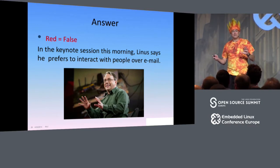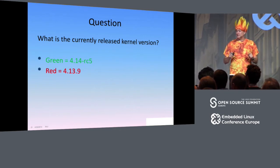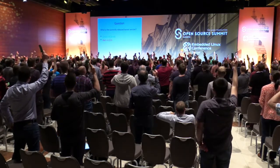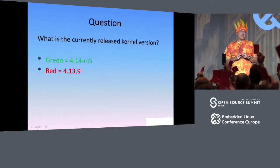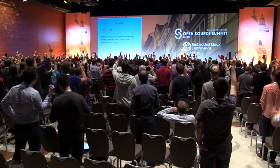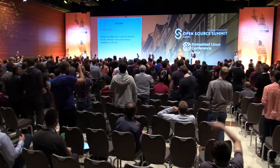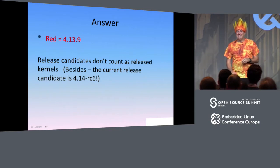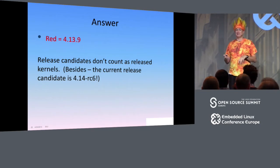Now we'll start with the real questions. What is the currently released kernel version — is it 4.14 RC5 or is it 4.13.9? The answer is 4.13.9, because release candidates don't count — it actually says 'candidate' in the name. And we're not on RC5, we're on RC6 — that was also in the keynote this morning. If you were holding up green, please sit down.